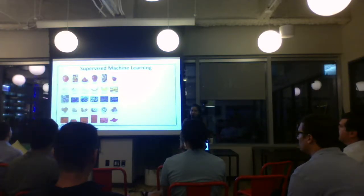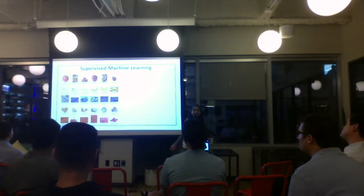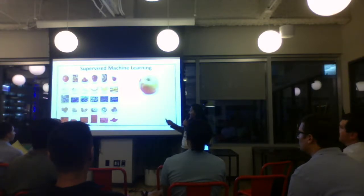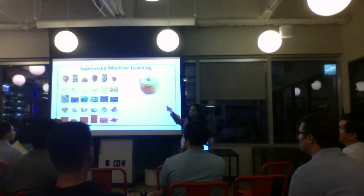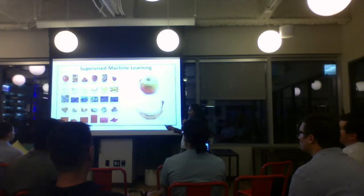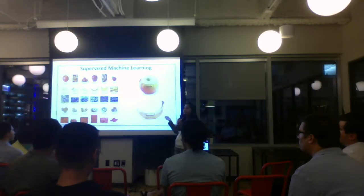Say you have a ten-year-old kid. You make the kid learn how different fruits look, and then take the kid to a supermarket and show a picture of an apple. The kid will label it 'apple' because you made them learn how it looks. Similarly for banana — even if it's slightly different from what was shown, the child can label it. When you have labels for your output variable and you know the output, that is supervised learning.